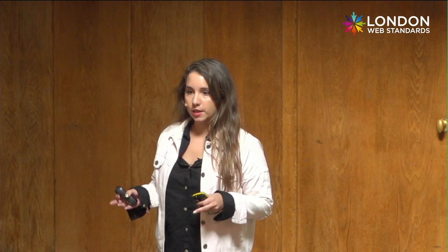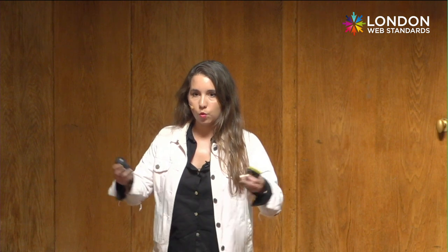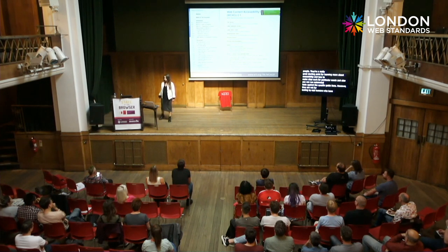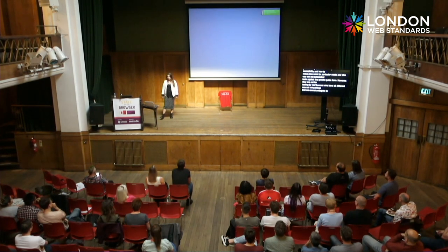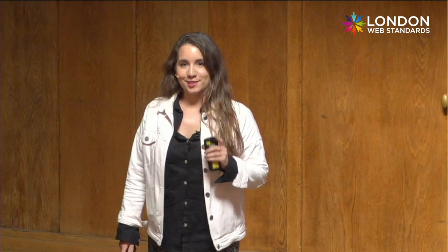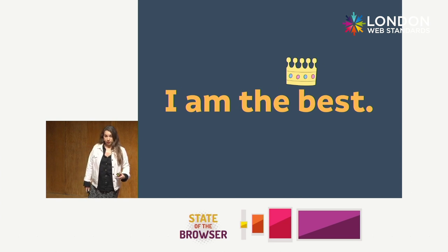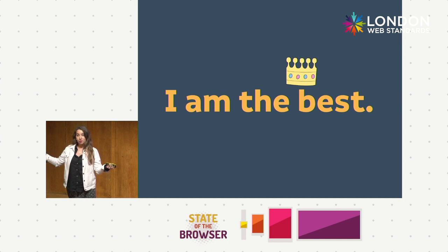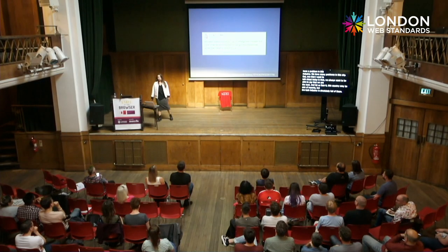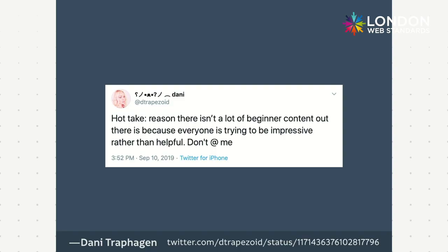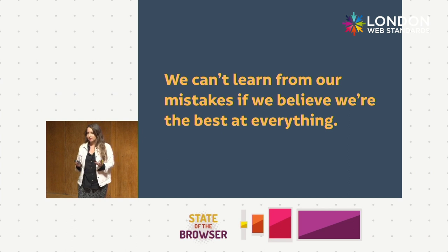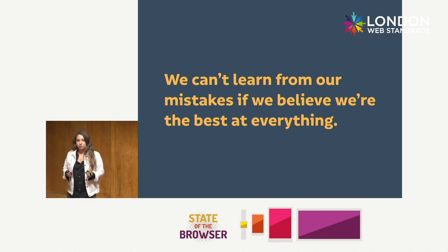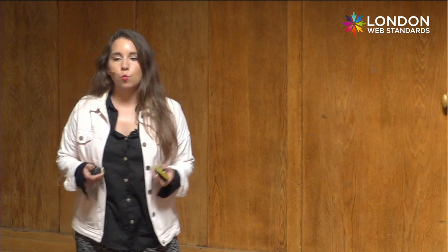We have a problem in this industry: we always want to be able to say that we're the best. This country may be sick of experts, but the tech industry is absolutely full of them. As one tweet summed it up: there's a reason there isn't a lot of beginner content out there — because everyone is trying to be impressive rather than helpful. The desire to be seen as the best is incompatible with improving, because we can't learn from our mistakes if we believe we're already the best at everything.